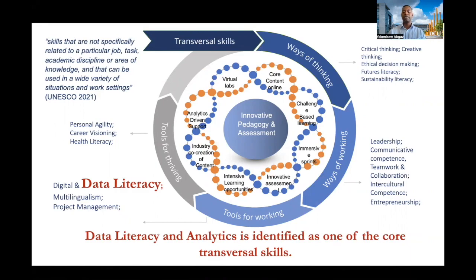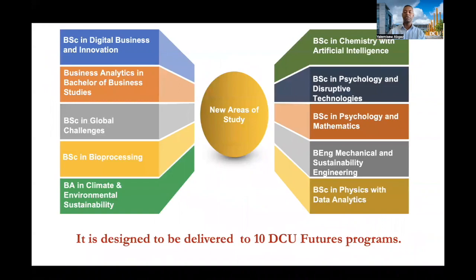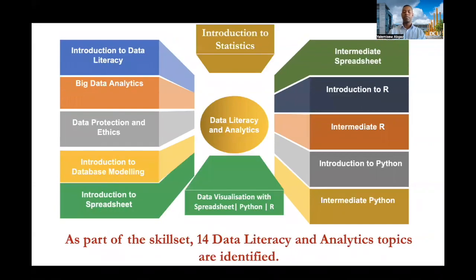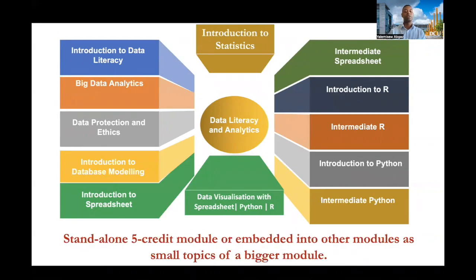Data literacy and analytics is identified as one of the core transversal skills by DCO Futures, and it is designed to be delivered to 10 DCO Futures programs. As part of the skill set, 14 data literacy and analytics topics are identified, as you can see in this diagram, and they can be delivered as a five-credit standalone module, or embedded into other modules as small topics of a bigger module.